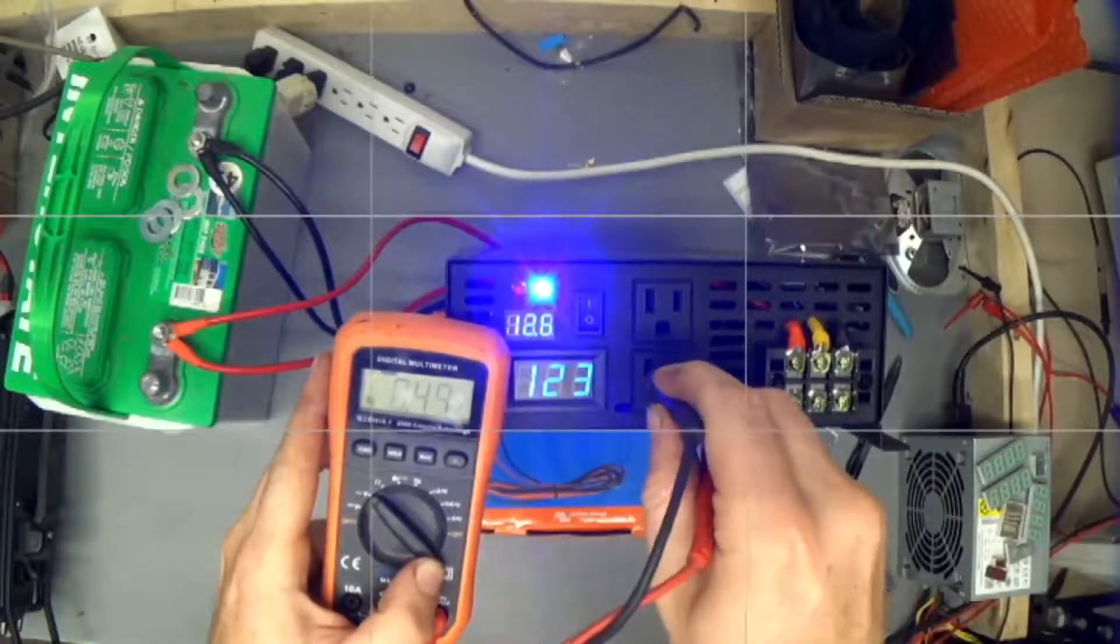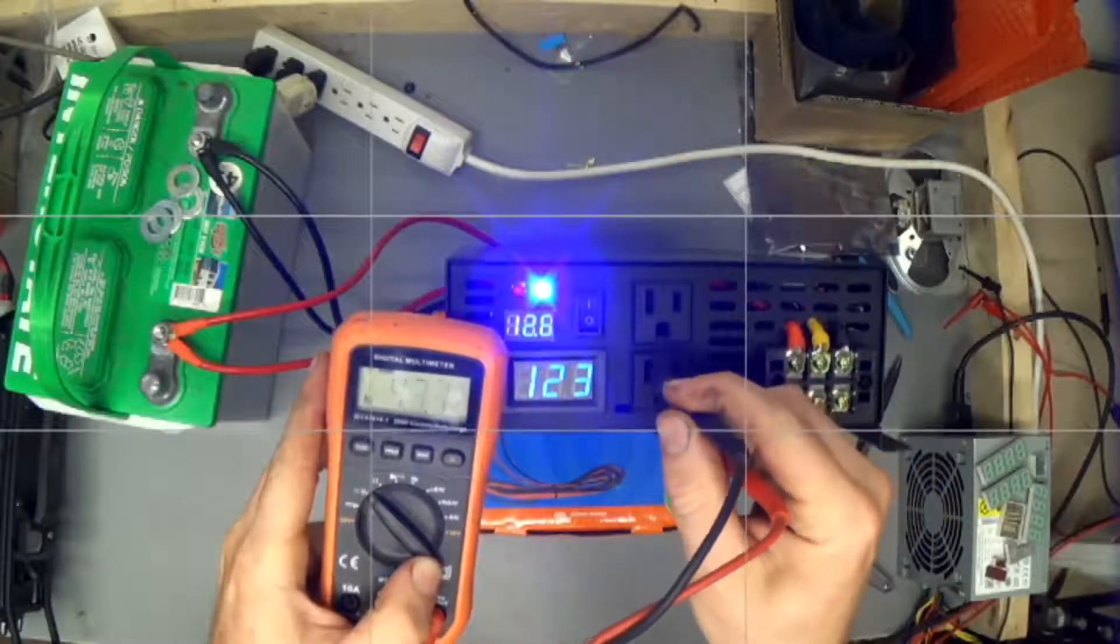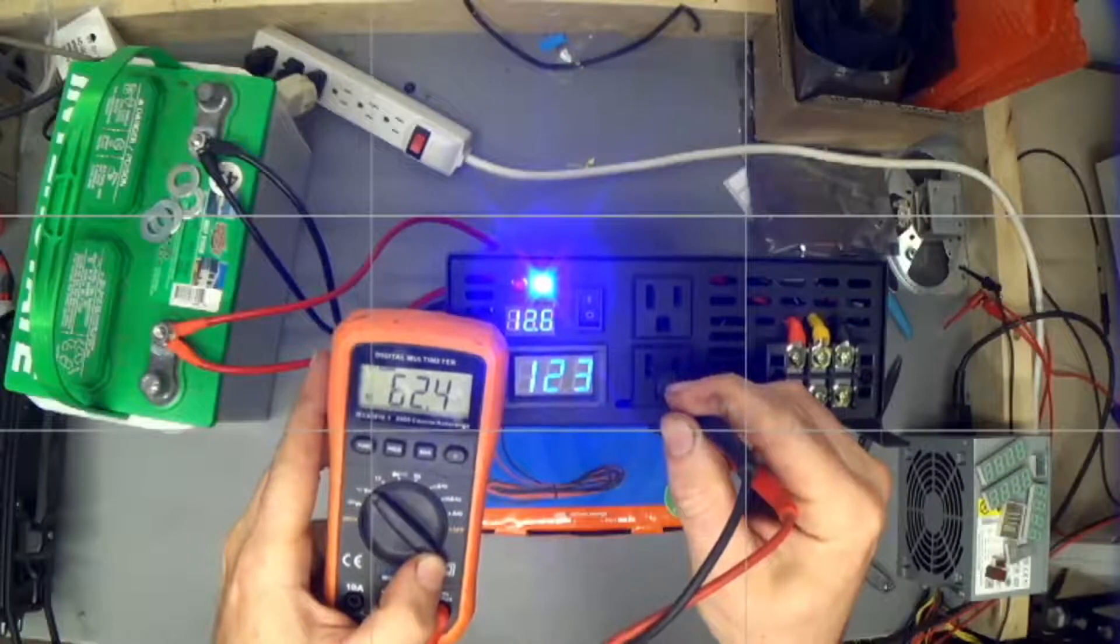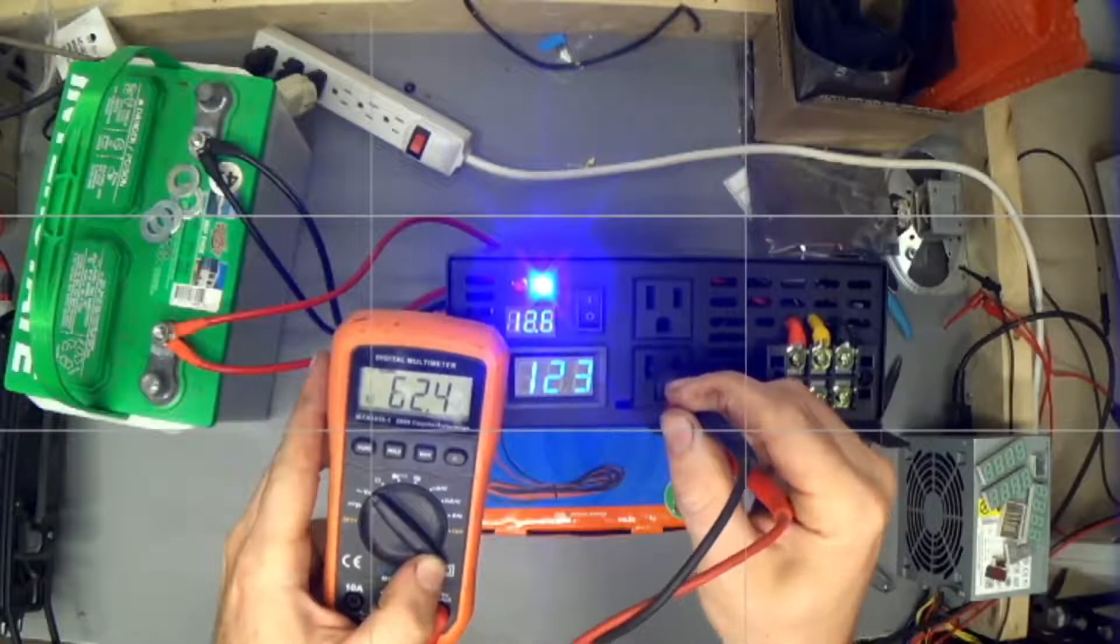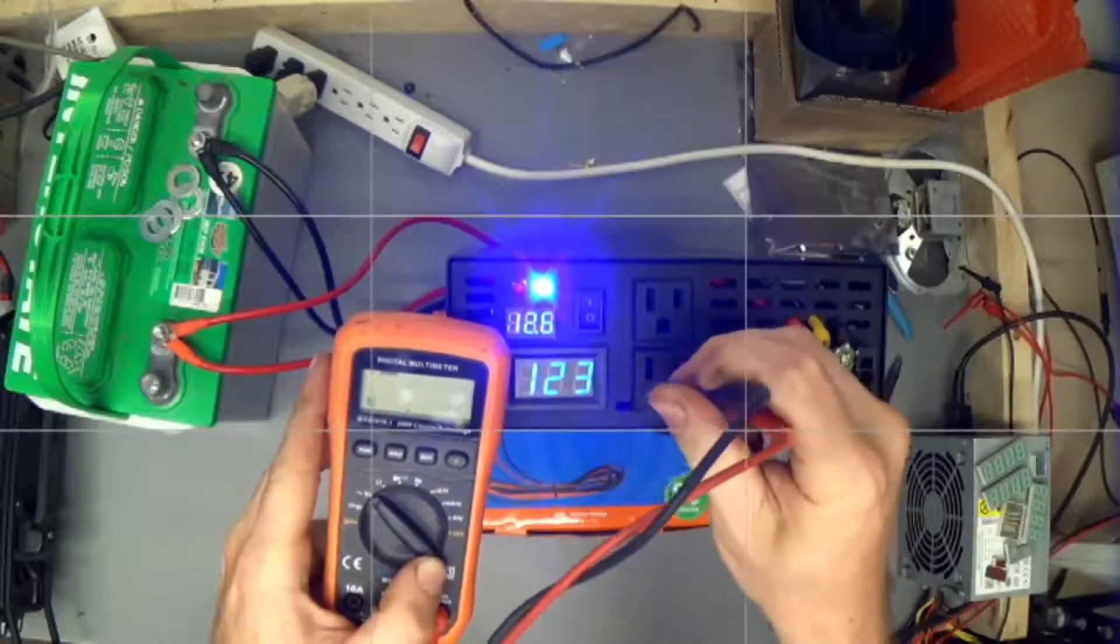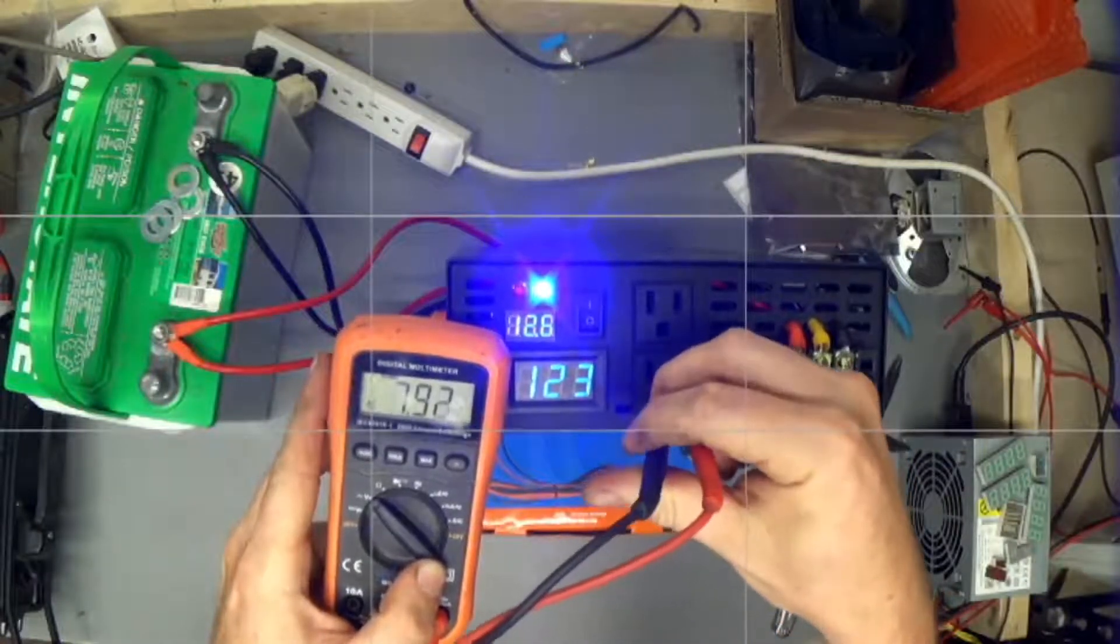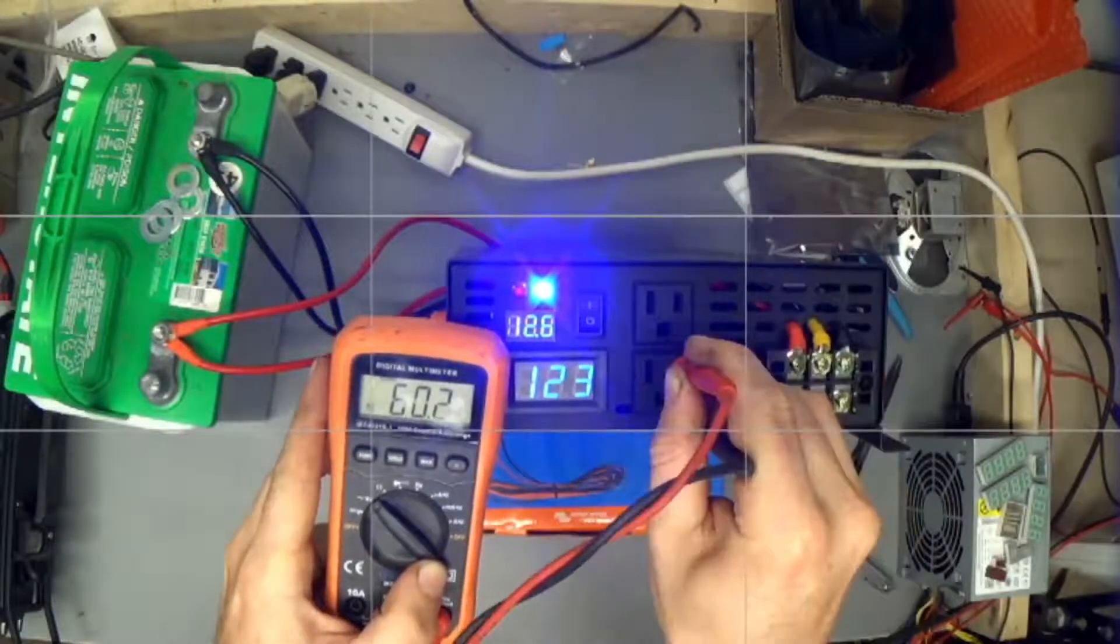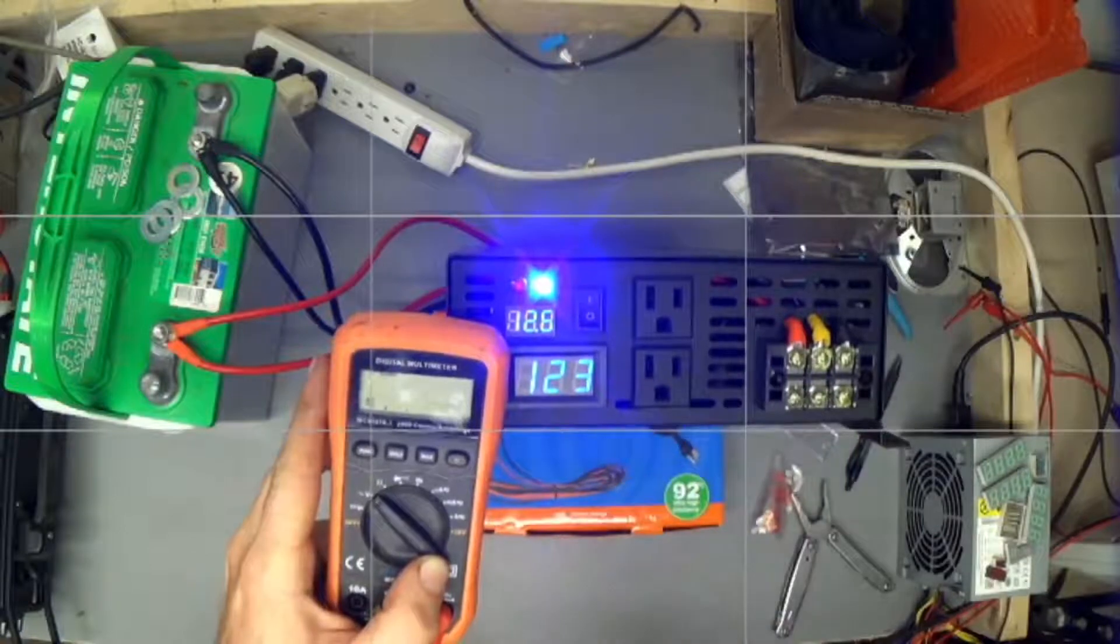Happy day. Now let's measure between the hot and the ground, shall we? What is this? 60 volts AC between the hot and the ground? Let's try from the neutral to the ground. What? 60 volts between neutral and ground? What's going on here?